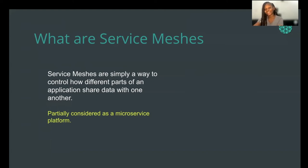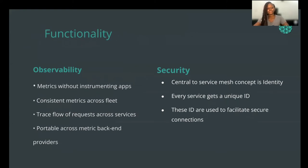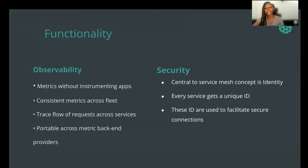Now let's look at the functionalities of the service meshes. People adopt service meshes for countless reasons, but it's often as a result of the use cases they're looking to benefit from. Some of the capabilities people frequently look out for — one is observability. Using service meshes, you can generate all kinds of traces, logs, and metrics. You can also ingest these into your monitoring system of choice to get value without instrumenting your application. This is one of the very important capabilities that adopters frequently look out for.